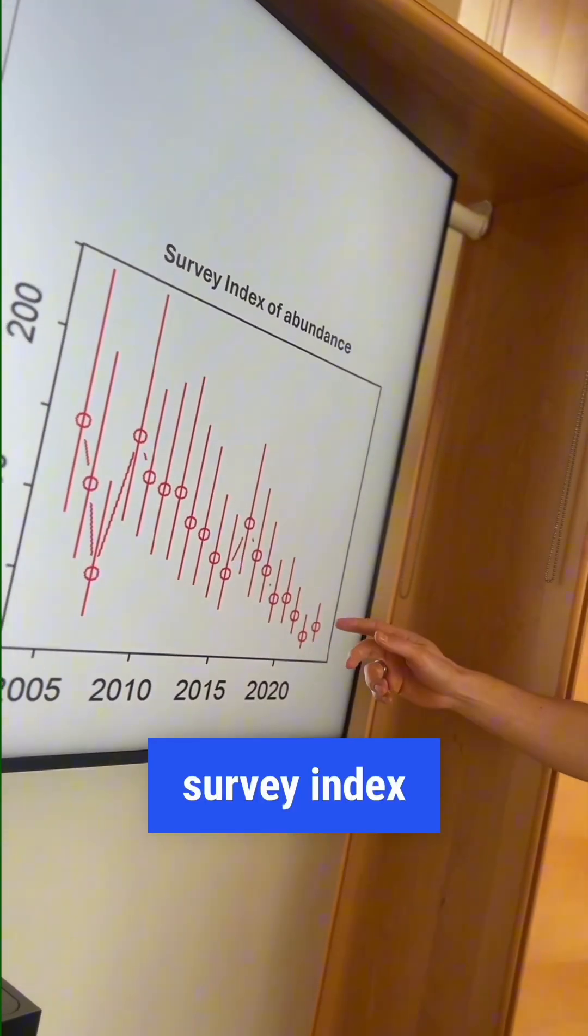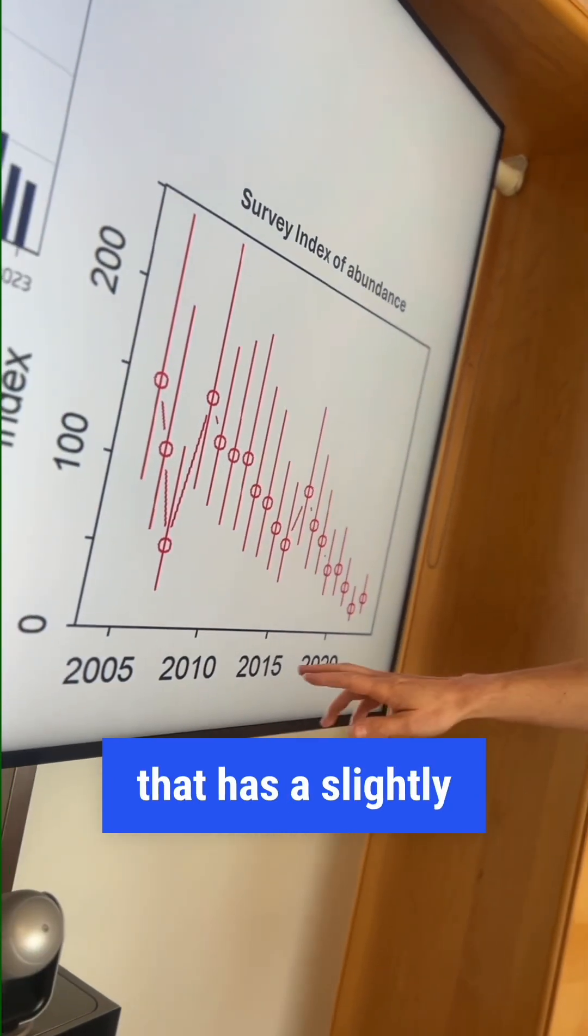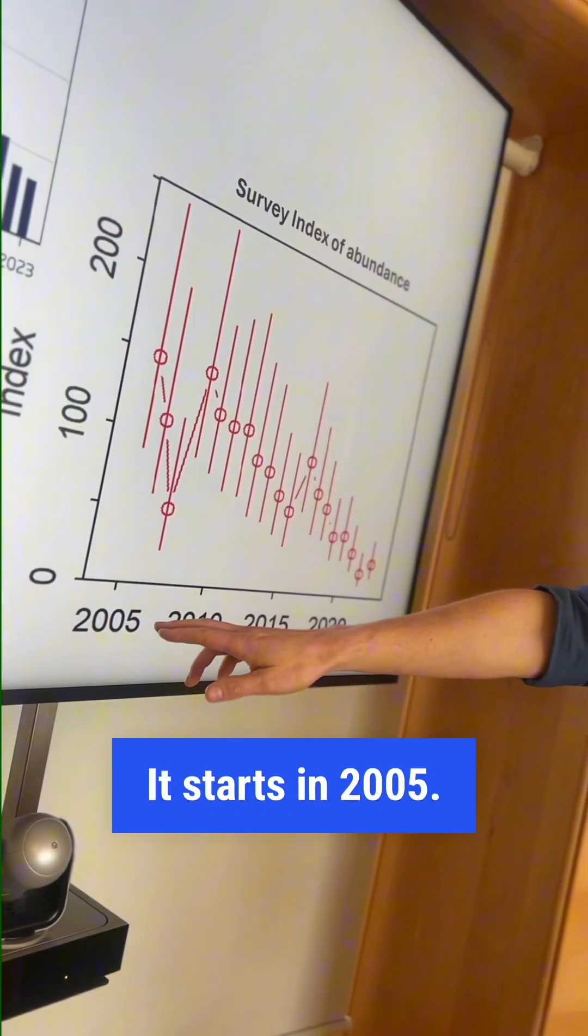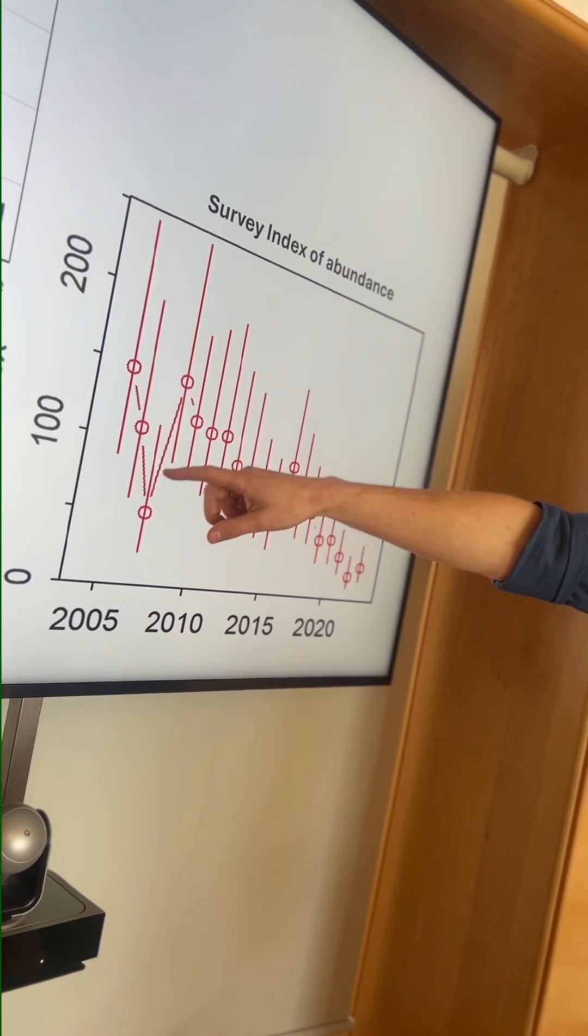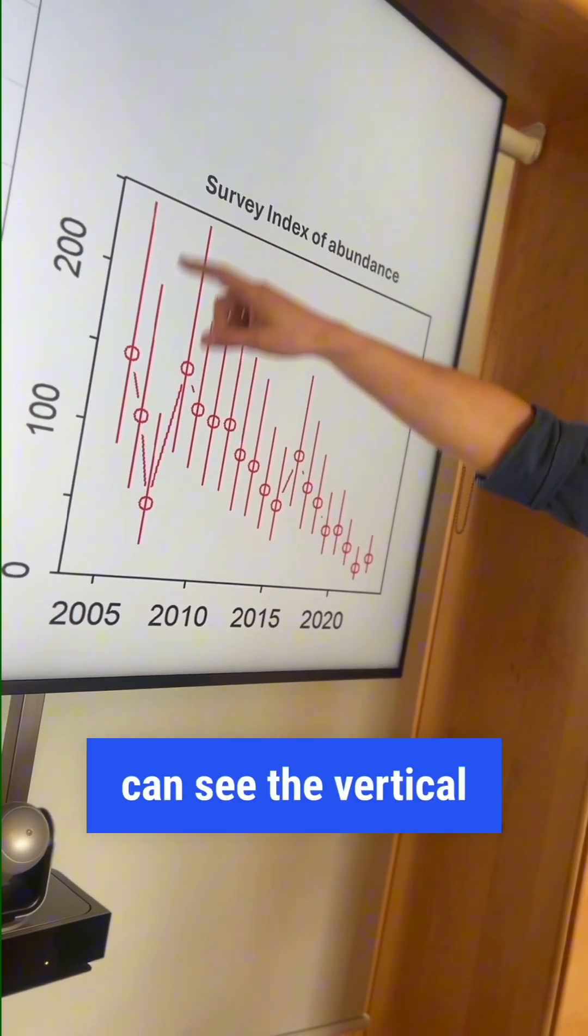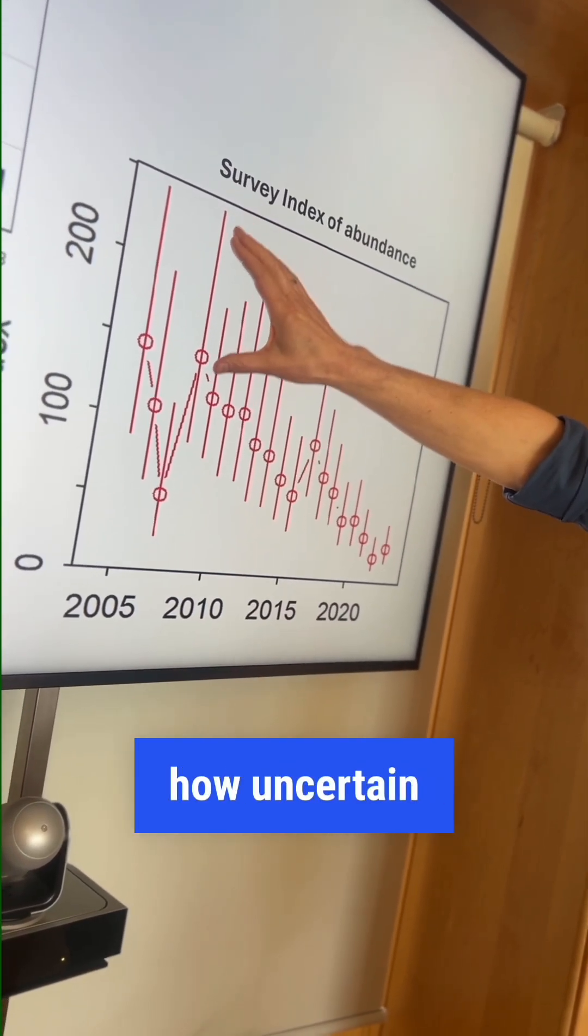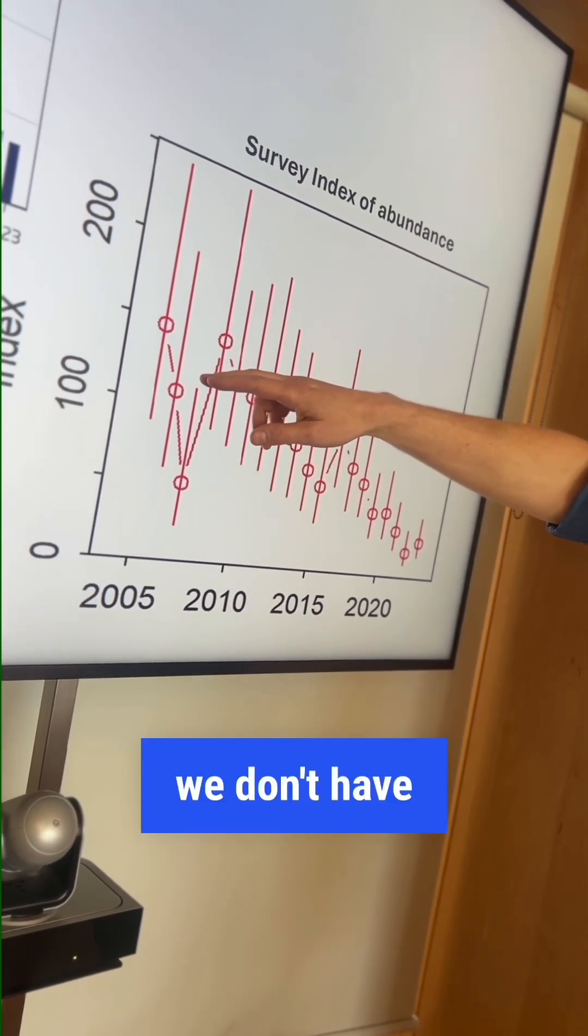We can see our survey index of abundance that has a slightly shorter time series—it starts in 2005. You can see the vertical lines here indicate how uncertain we are. We don't have an awful lot of data and there's a large amount of uncertainty.